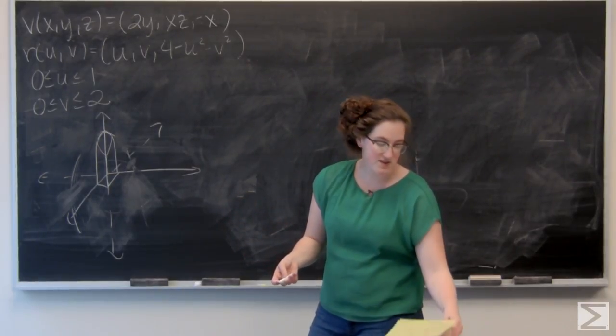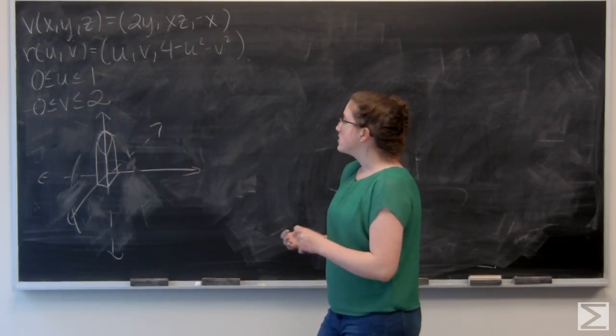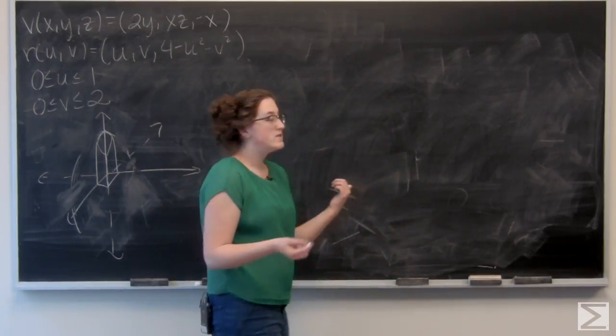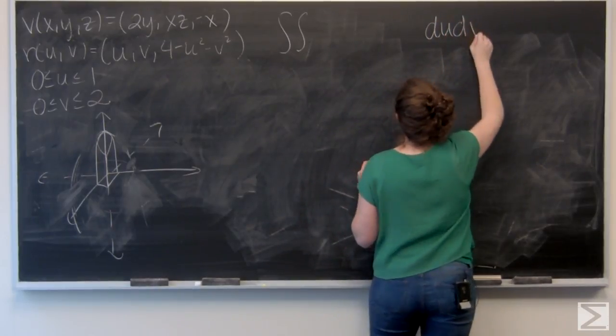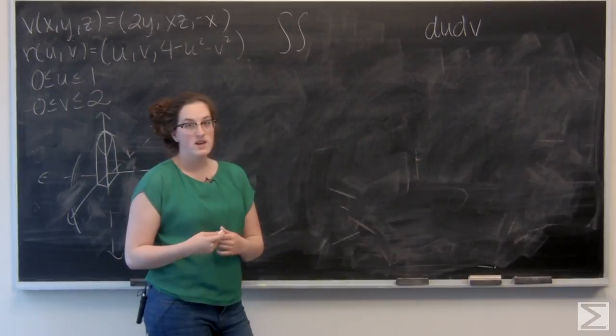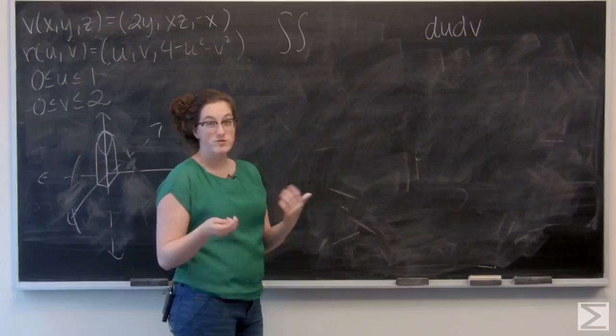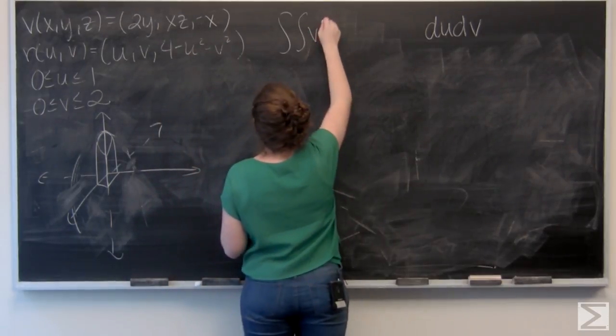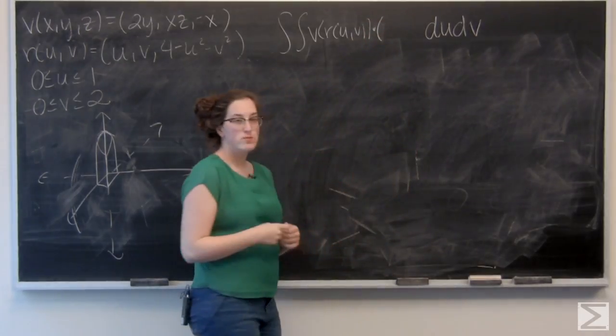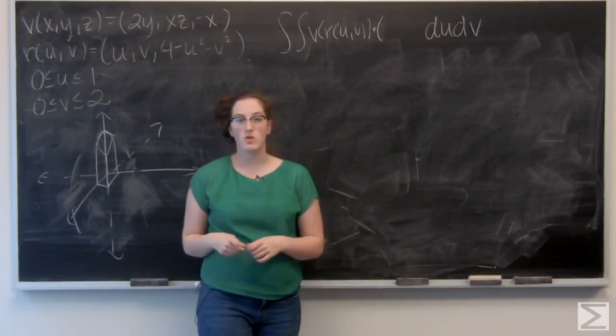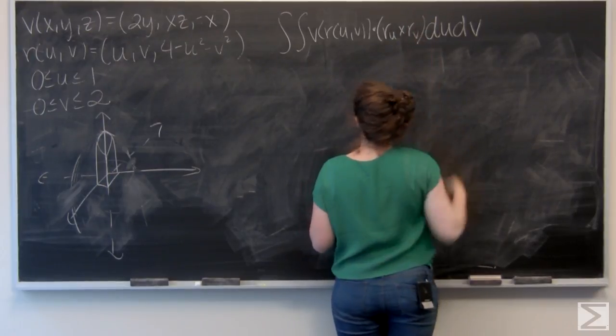And then the second part of the question asks me to calculate the rate in meters cubed per second at which fluid is flowing through m. So to do that, I need a flux integral, and let's write down the general form of that. It's a double integral with respect to u and v, and it is a dot product of the vector field evaluated over the surface. So v of r dotted with the cross product of the partial derivatives of r. So r_u cross r_v.